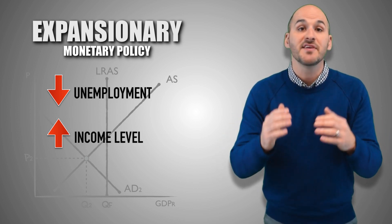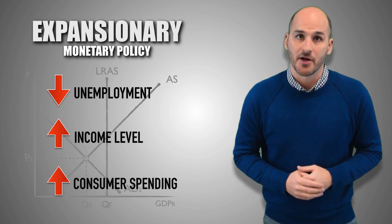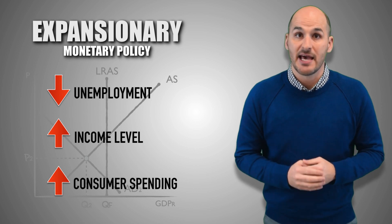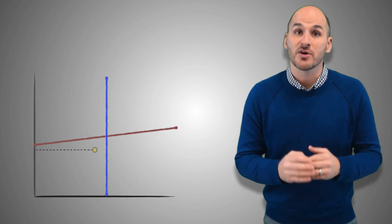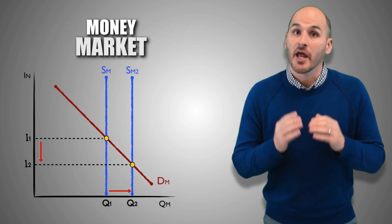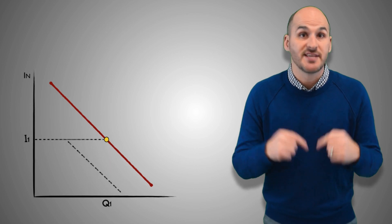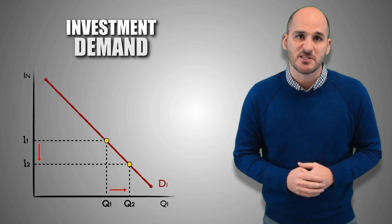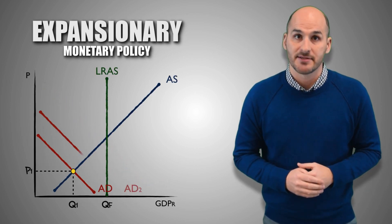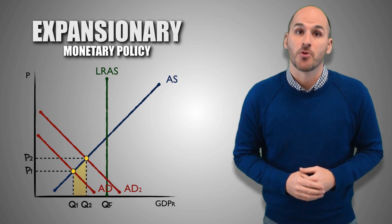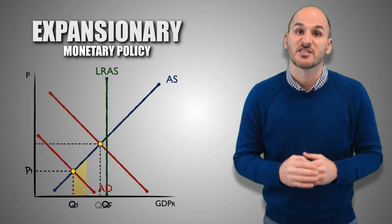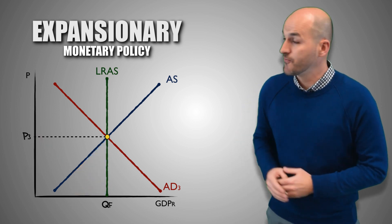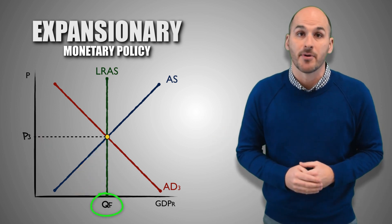With rising income levels, consumer spending increases, driving aggregate demand to higher levels. In the end, the initial expansionary monetary policy increased the money supply and drove down nominal interest rates, which increased investment spending and boosted aggregate demand. This slashed the unemployment rate to 4-6%, increased the standard of living, and returned the economy to its full employment level of real GDP output.